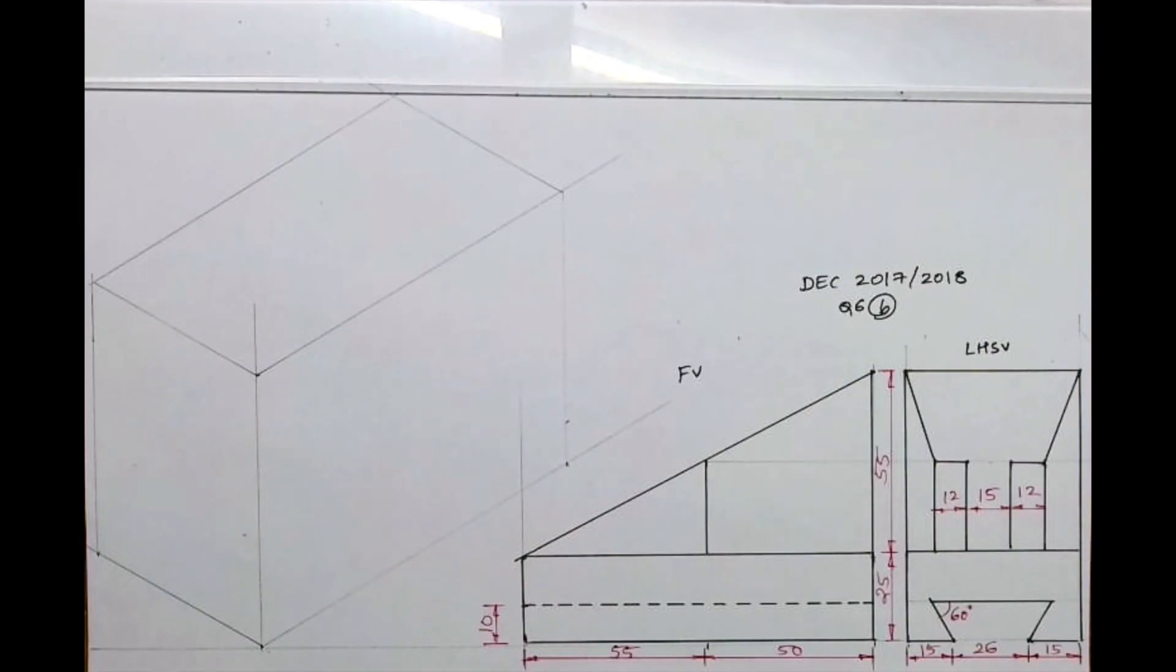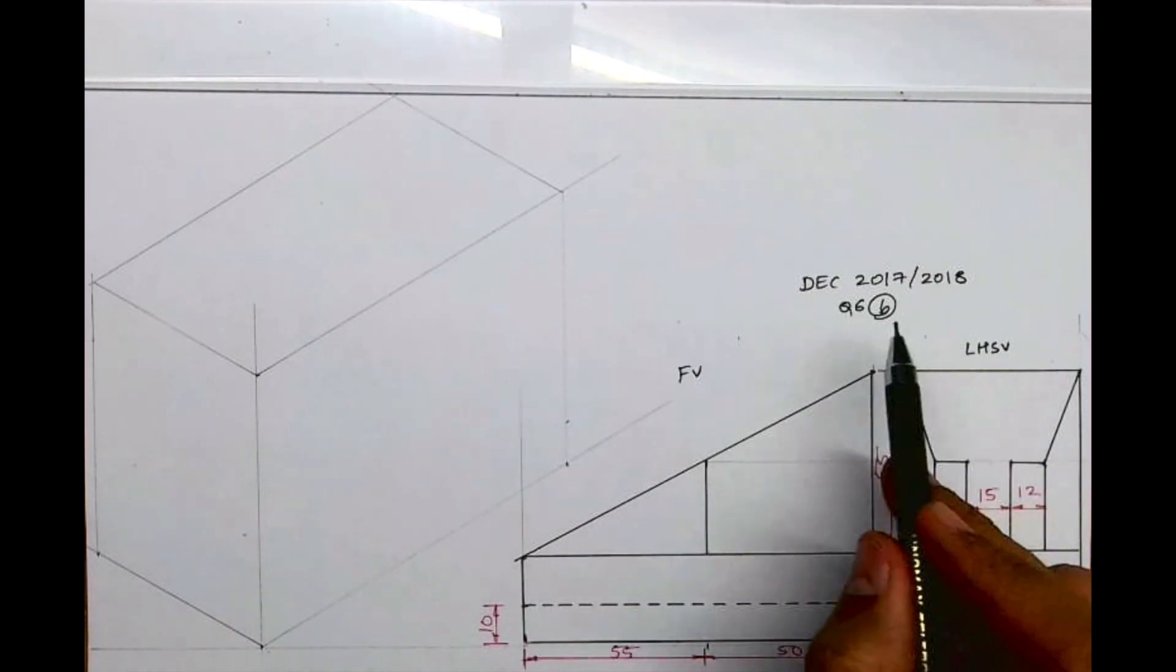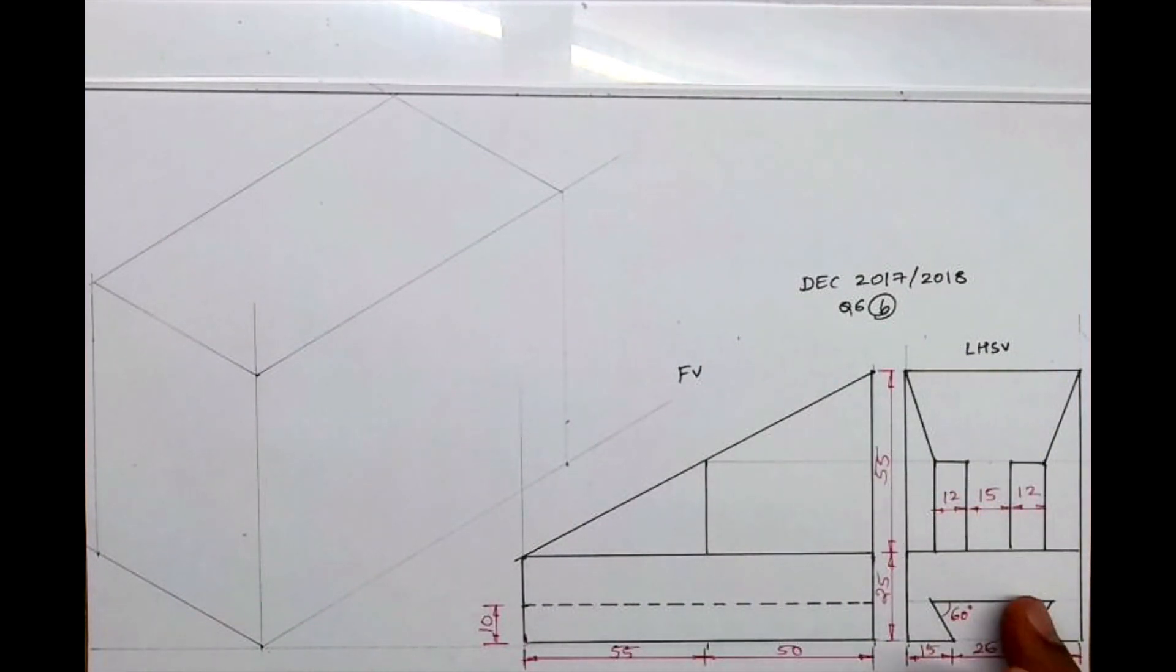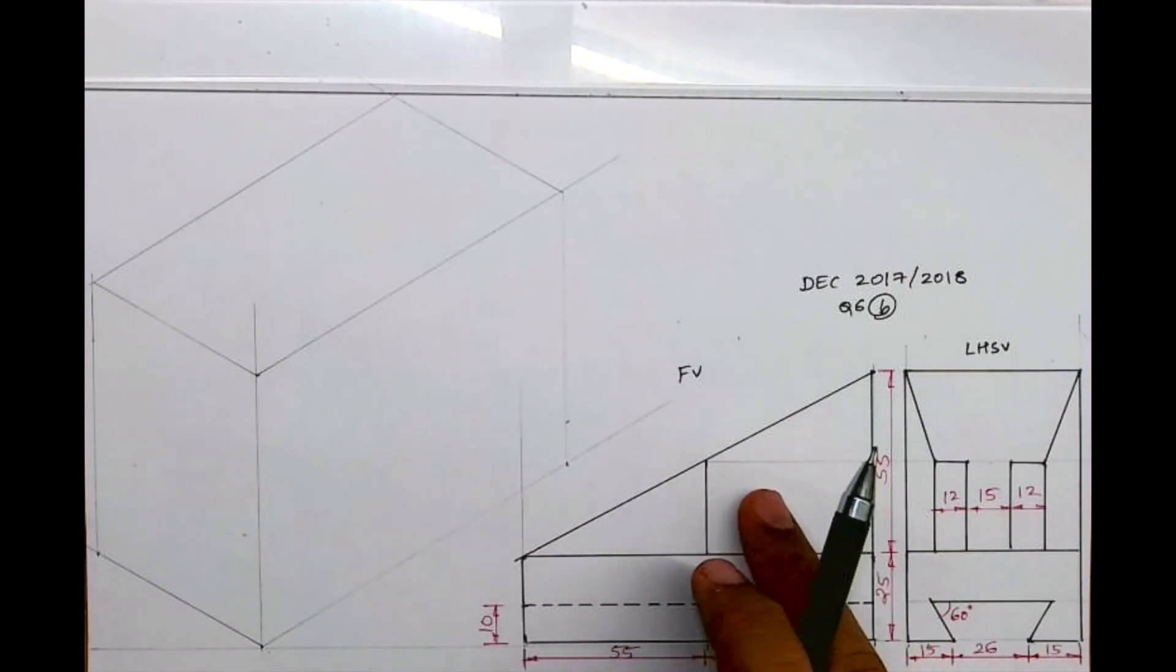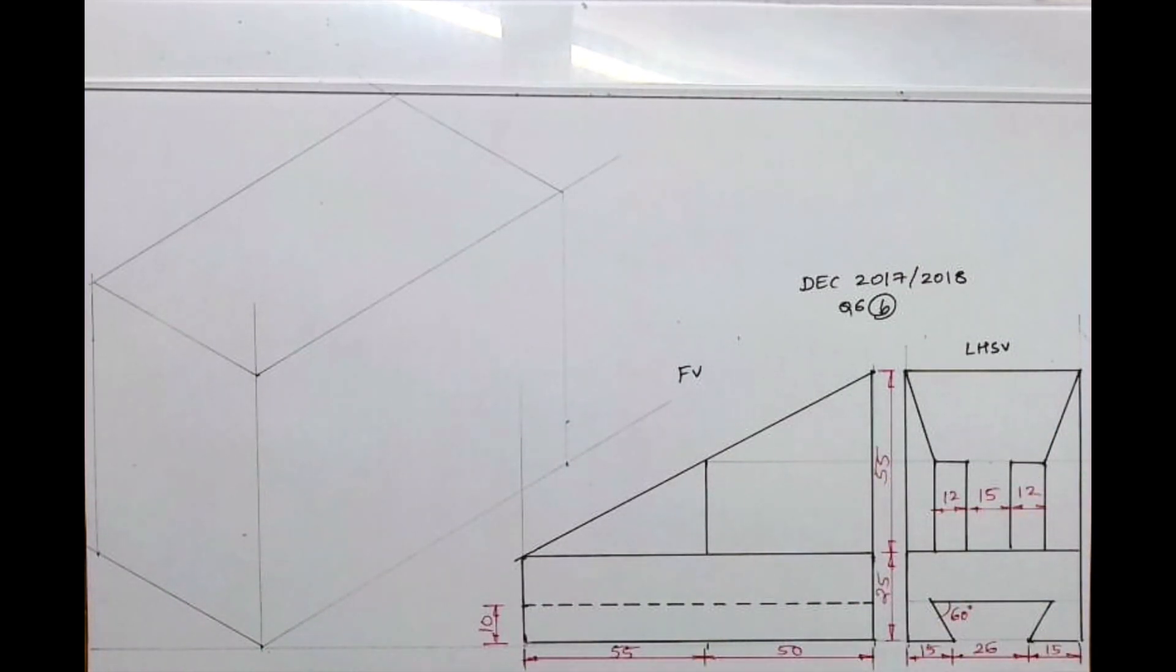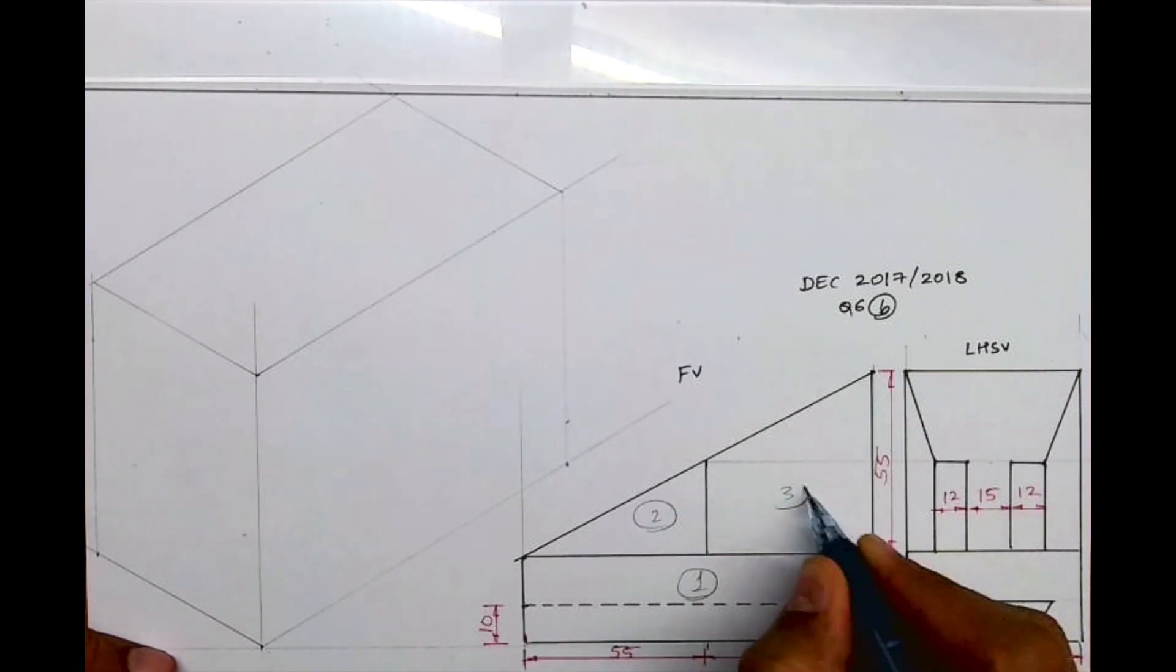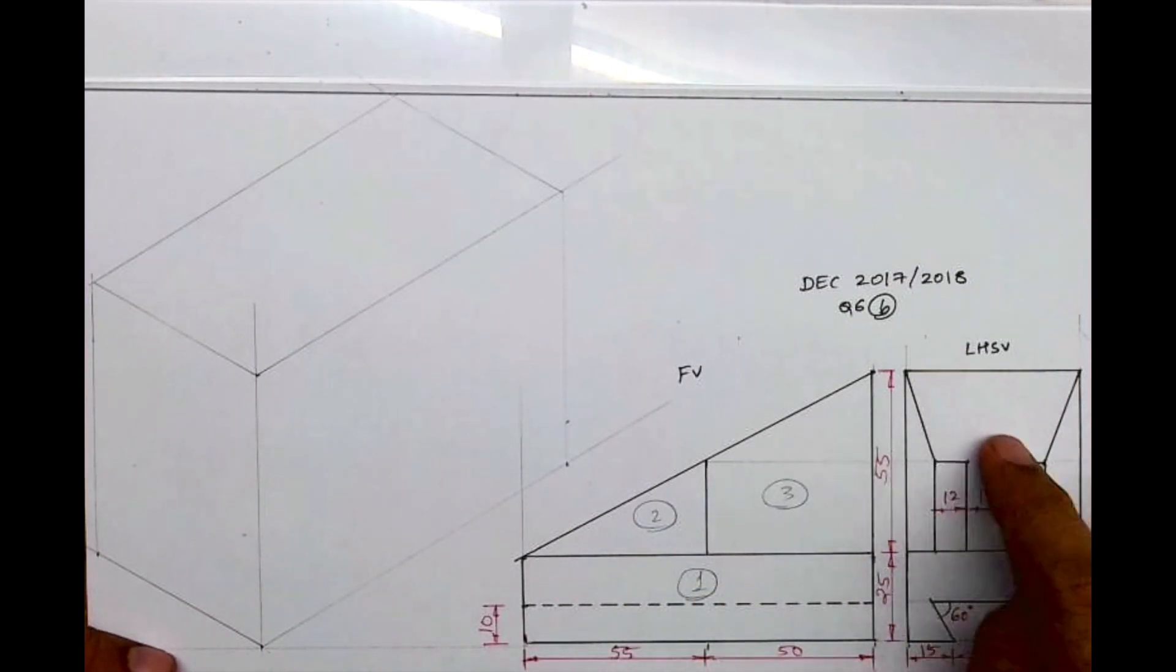Welcome to technical drawing. Today we'll see this problem, an engineering drawing from December 2017-18 paper. Isometric front view and side view is given. If you see, there are three parts: one, two, three in front view, and in side view we have a slope. So I'm writing one, two, and three, and this slope we have.